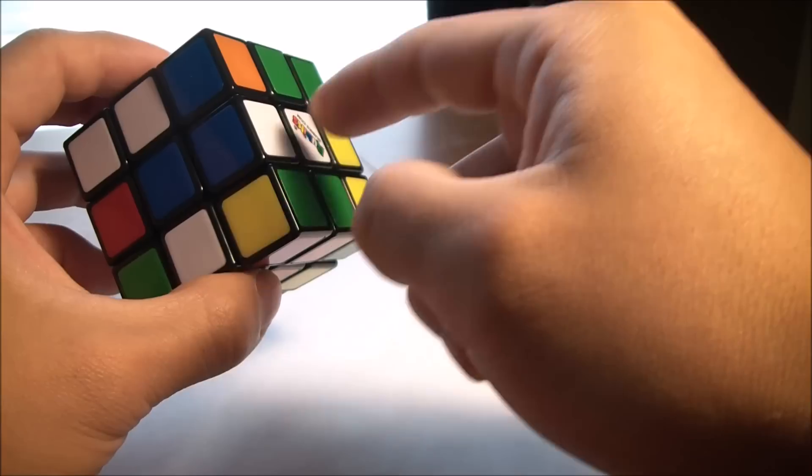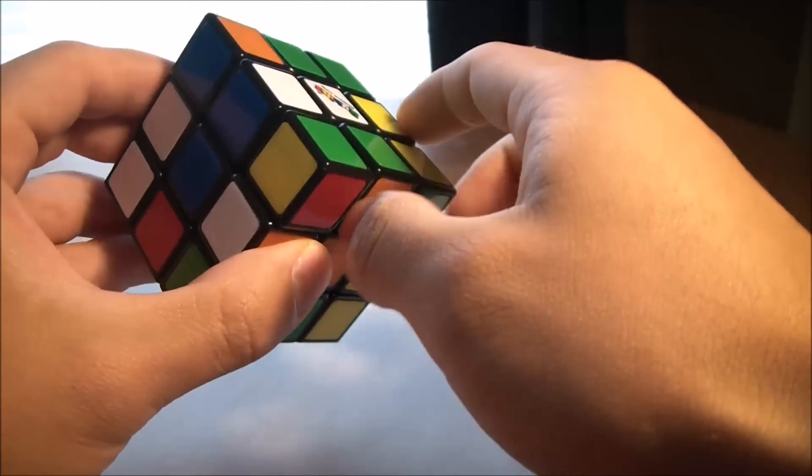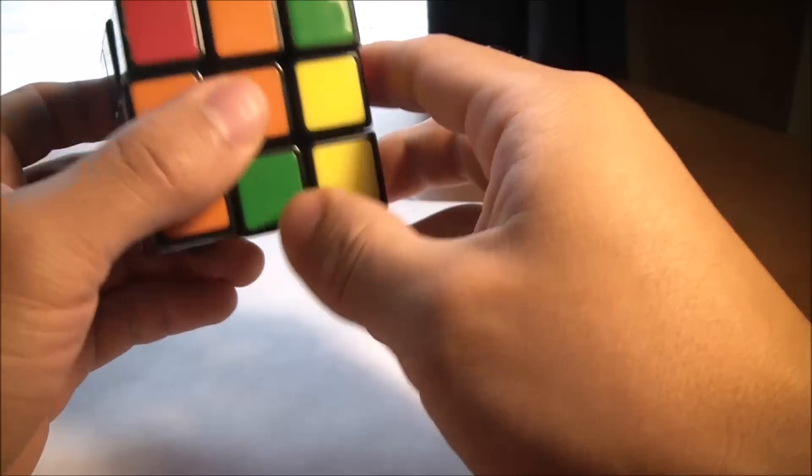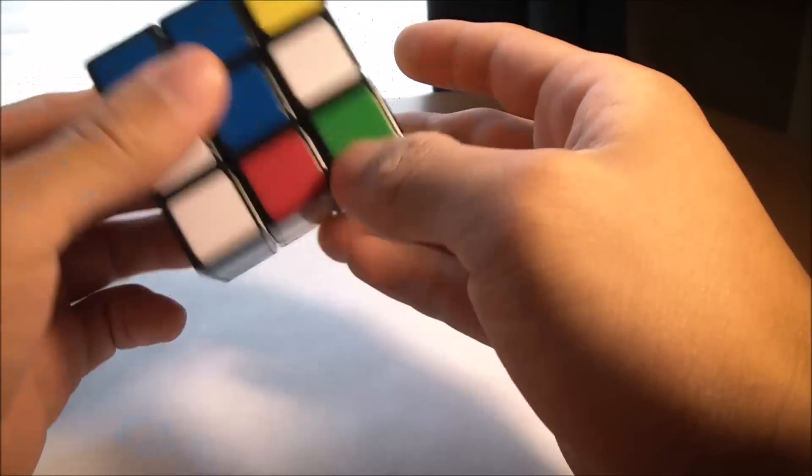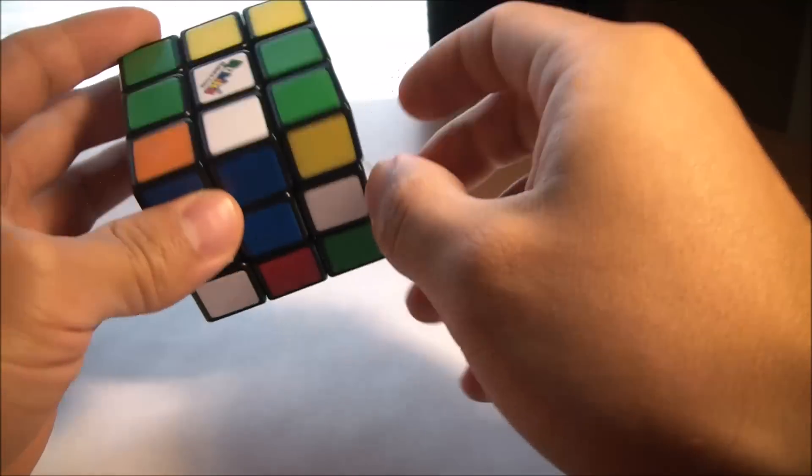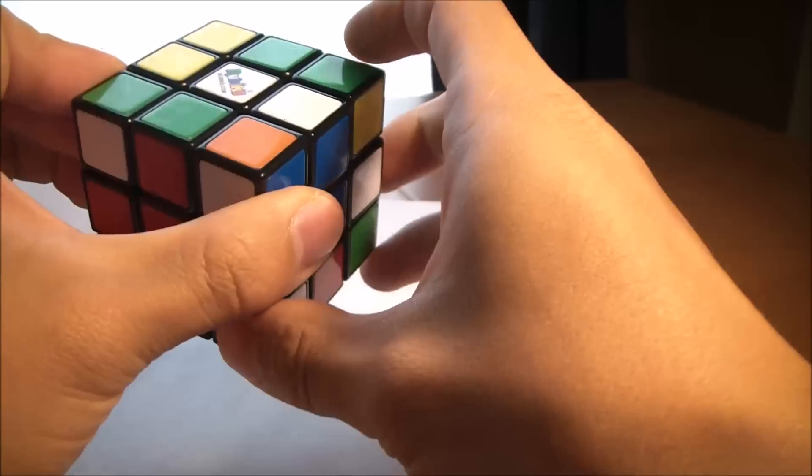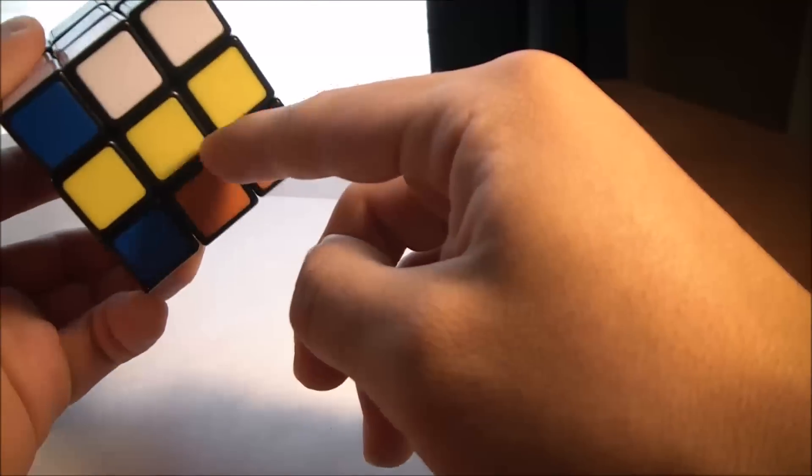Going further, the easiest thing I think to do to get a piece in the correct spot is just look directly under the Rubik's Cube white side you're looking at now, the yellow side.